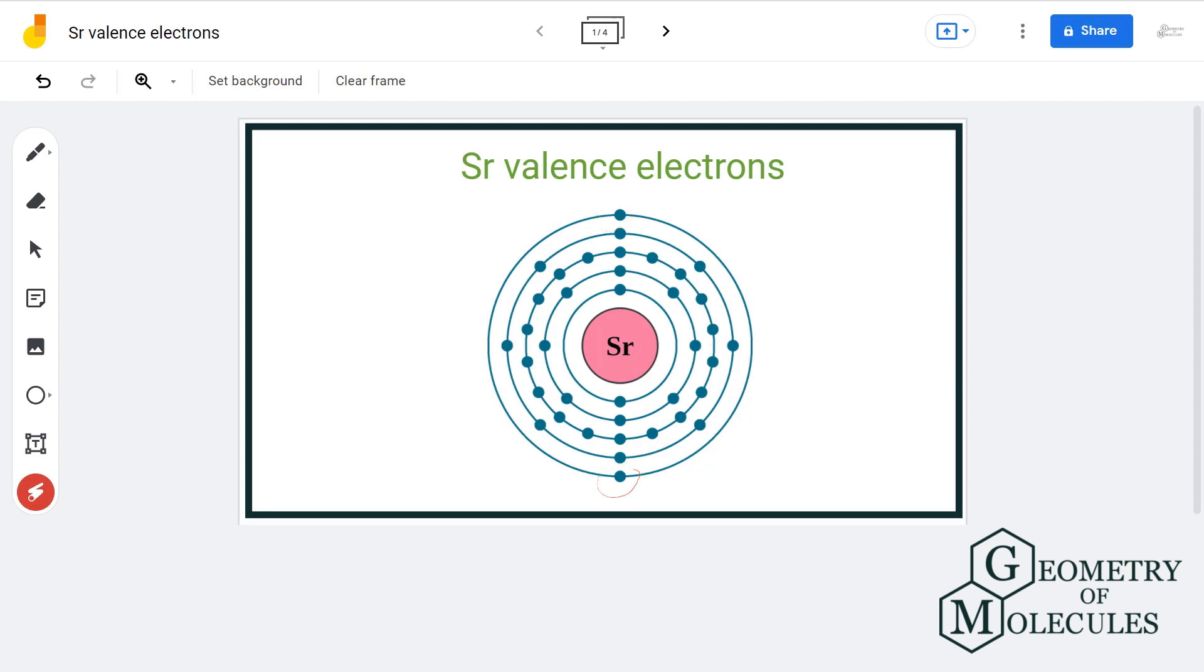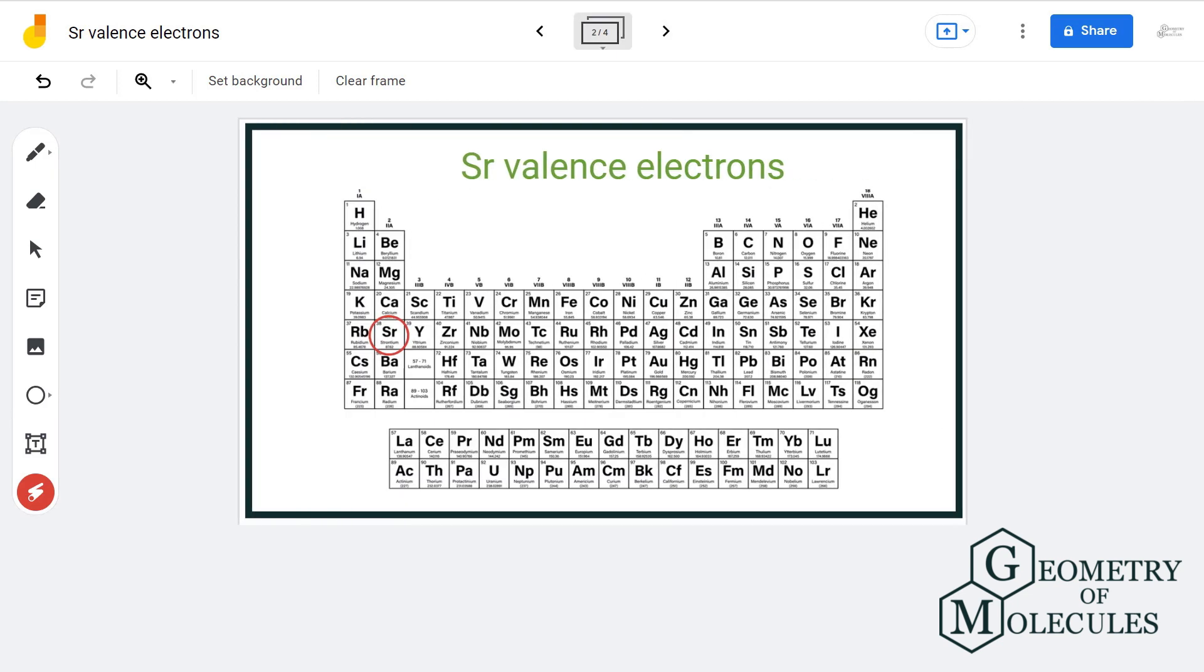The number of valence electrons can be determined by looking at the periodic table. For that, we will first locate the atom whose valence electrons are to be found.